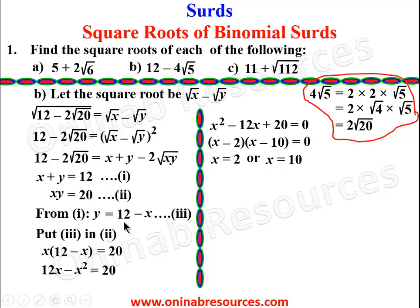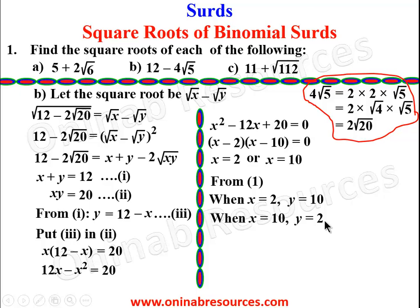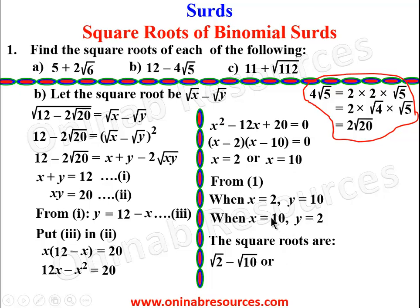Using these x values to find y from equation 1: when x = 2, y = 10; and when x = 10, y = 2. Since the connector is subtraction (not commutative), we get two distinct roots. The square roots are: √2 - √10, or when x = 10 and y = 2, √10 - √2. That completes part (b).